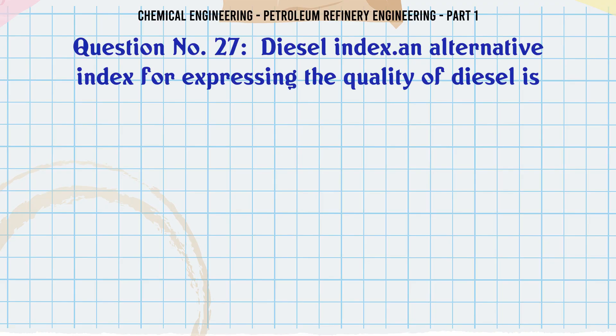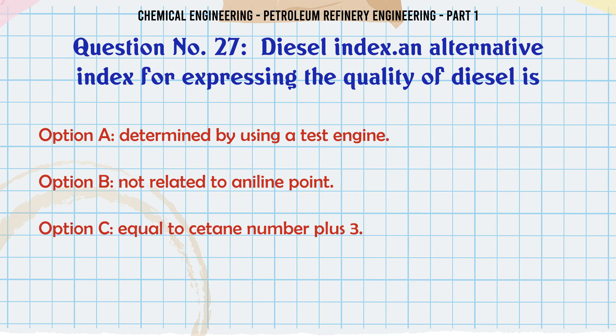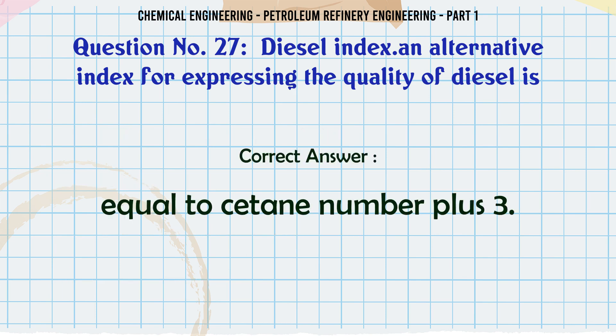Diesel index, an alternative index for expressing the quality of diesel: A. Is determined by using a test engine, B. Is not related to aniline point, C. Is equal to cetane number plus 3, D. All A, B and C. The correct answer is: Equal to cetane number plus 3.